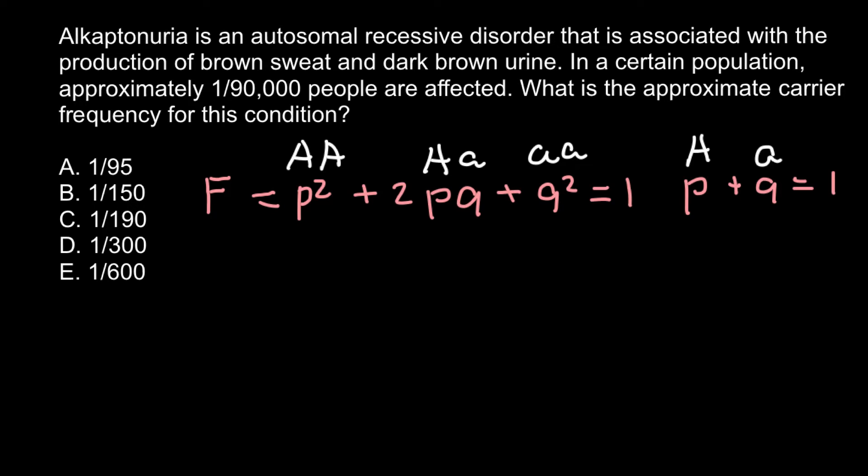So we know from our problem that one out of 90,000 people are affected. That means that one out of 90,000 people belongs to this genotype and phenotype, because here genotypes equal phenotype. And how we find number q if we are given q²? We just have to take a square root of this number.